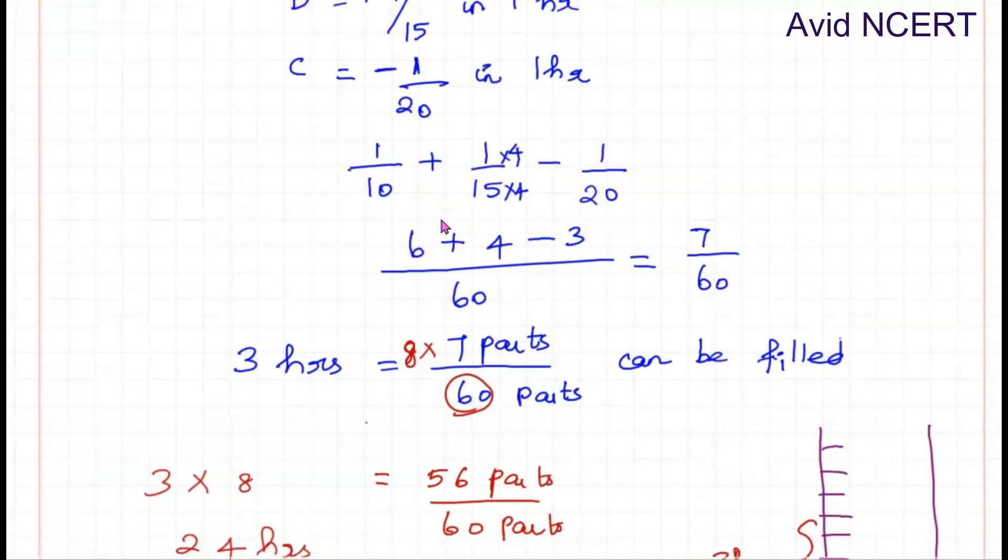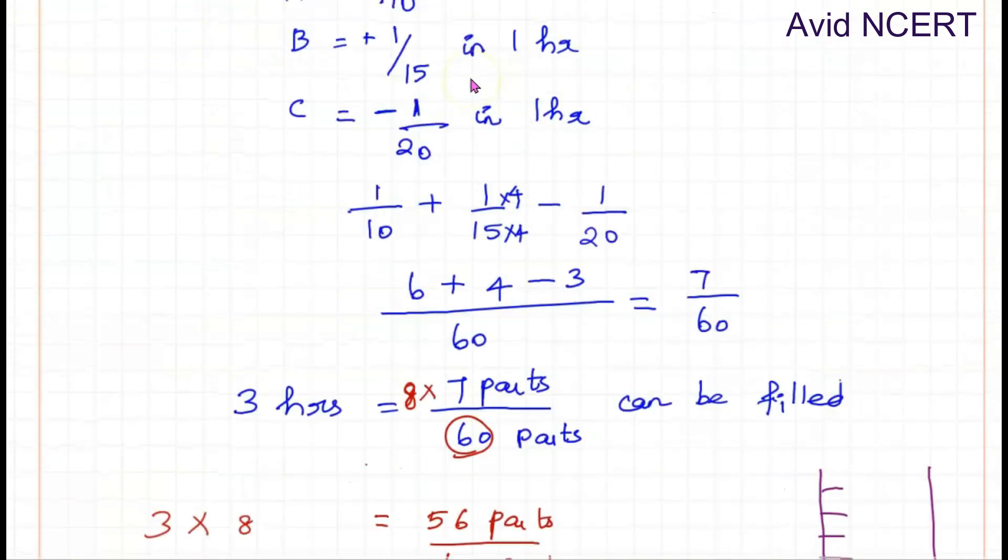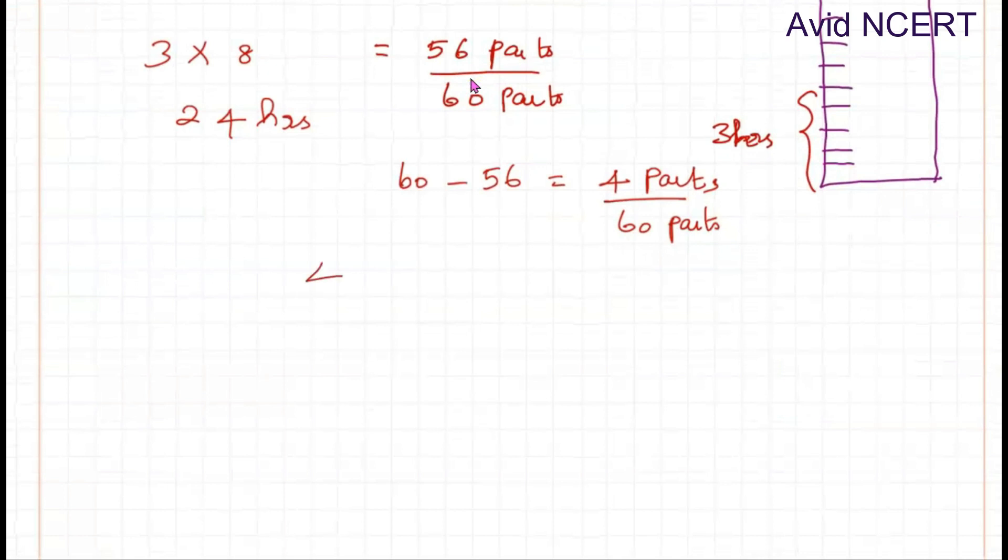Since A is opened first and A takes 10 hours to fill the tank, so 4 out of 60 parts with pipe A can be filled in 4/6 hours, which equals 2/3 hours. 2 times 2 is 4, 2 times 3 is 6. So 2/3 hours.